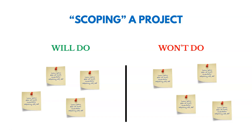As we scope the project, something important to know is that we should not only talk about what we plan to do, but also what we're not going to do. We want to distinguish between those, and it's actually important to note both things as we scope the project.